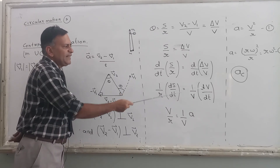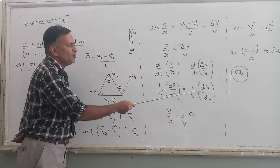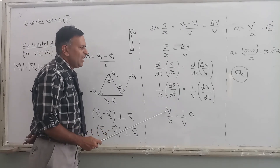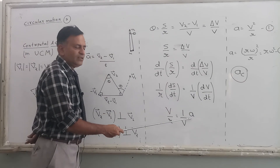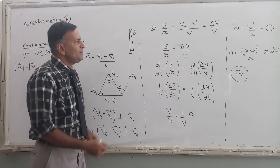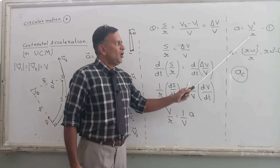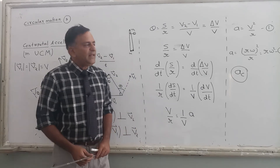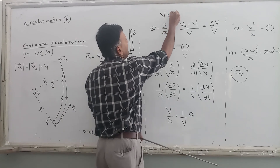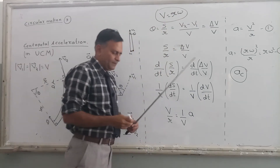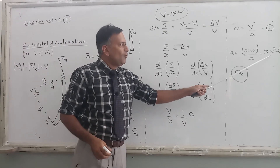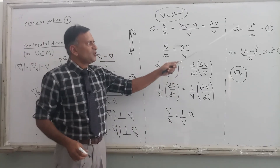Differentiating both sides with time: radius is constant during uniform circular motion so r stays outside, speed is also constant so v stays outside, and delta v becomes dv for differentiation. So ds/dt is velocity and dv/dt is acceleration, giving us v/r equals a/v. Transposing v to the other side: a equals v squared upon r. This is the first expression for centripetal acceleration. Since v equals r omega, substituting gives a equals r omega squared.